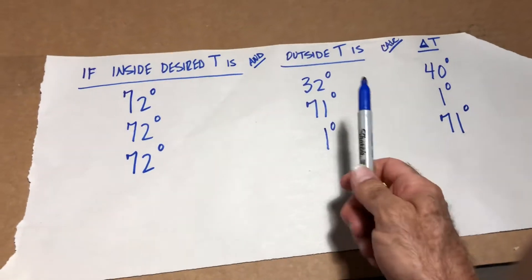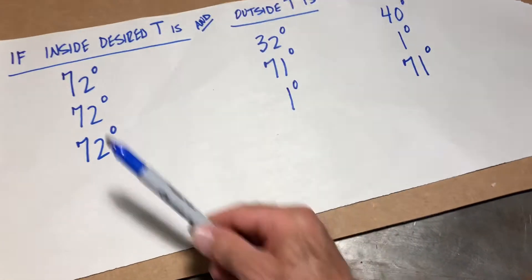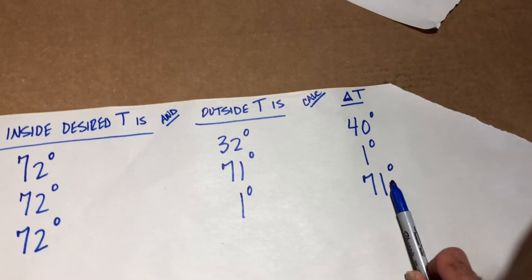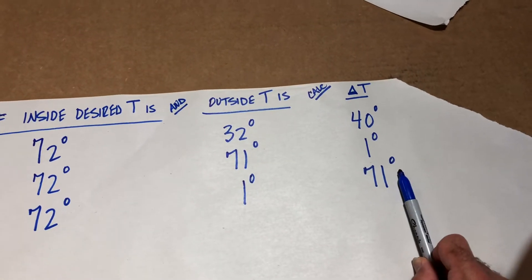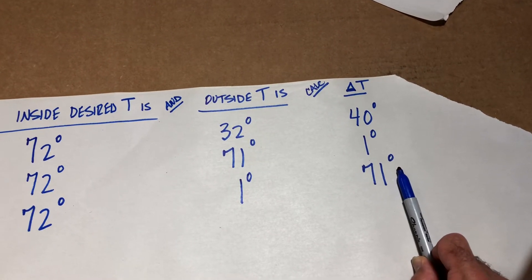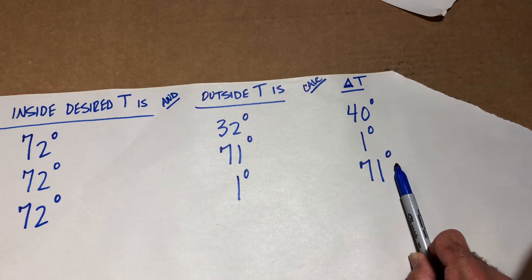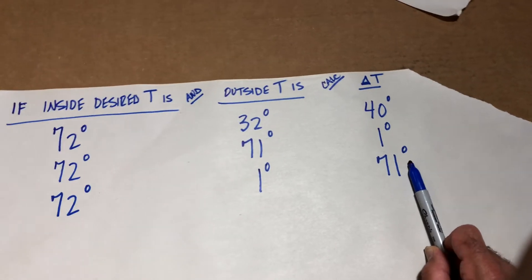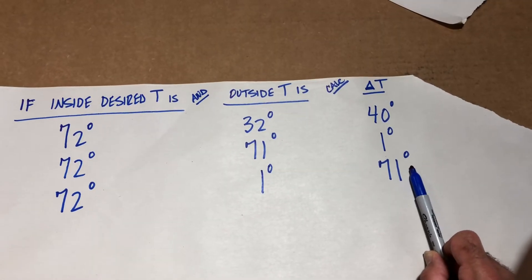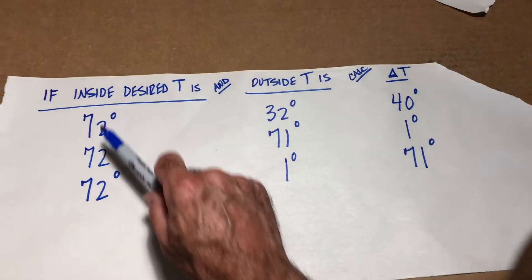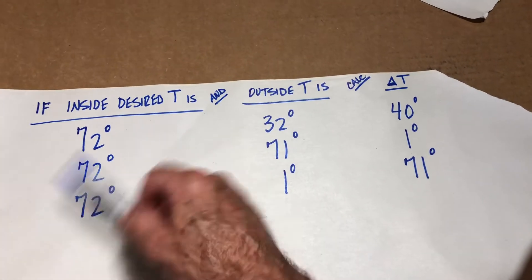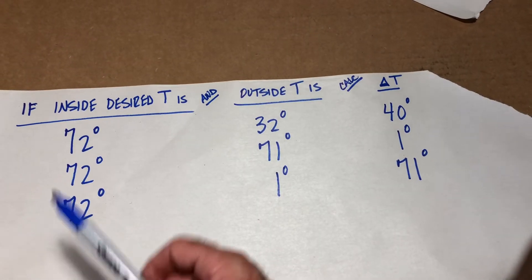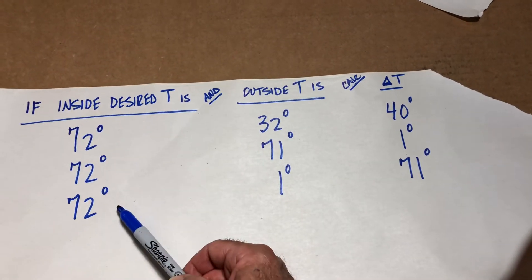So you can see the bigger the difference in temperatures, the bigger this number is going to be. And this number factors into our design heating load calculations, which you've seen a little bit of and I'm going to explain in a lot more detail. But for now, understand 72 degrees is what we're going to use unless I tell you something differently — that's what you should assume.